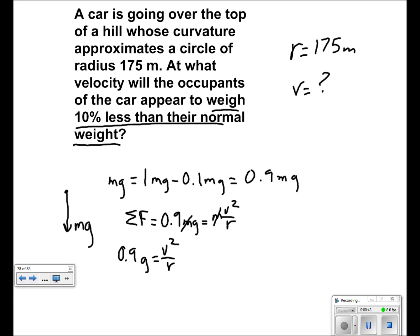We multiply both sides by r to get v squared alone, getting 0.9gr is equal to v squared.